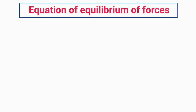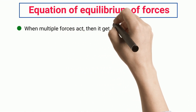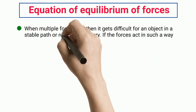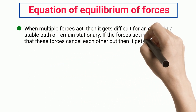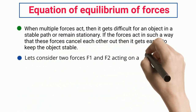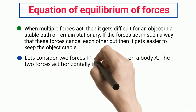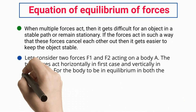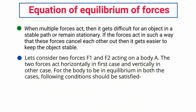Equation of equilibrium of forces: when multiple forces act, it gets difficult for an object to remain on a stable path or stay stationary. If the forces act in such a way that they cancel each other out, it becomes easier to keep the object stable. Consider two forces F1 and F2 acting on a body A, acting horizontally in one case and vertically in the other.